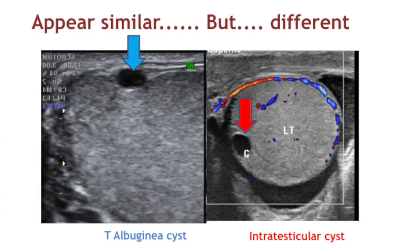These are two transverse sections of the testis from two different patients. The blue arrow shows a small tunica albuginea cyst, and the red arrow shows a small cystic lesion at a subcapsular location — basically an intratesticular cyst. So these are peripherally located cysts but distinguished as tunica albuginea and intratesticular cysts.